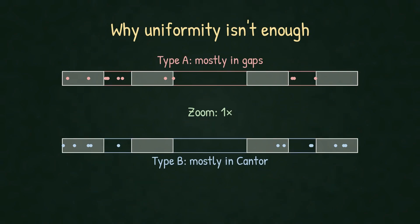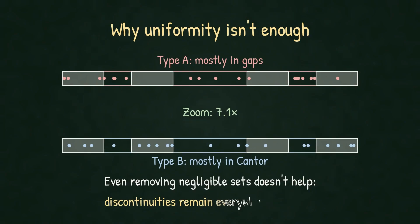But here's what makes this truly problematic. This isn't just a problem at one scale. If we zoom in, the fractal structure repeats. No matter how deep we go, we keep finding the same issue: sequences that converge to different values. Even removing negligible sets doesn't help here. The problem persists at every scale. So, we need a better approach.